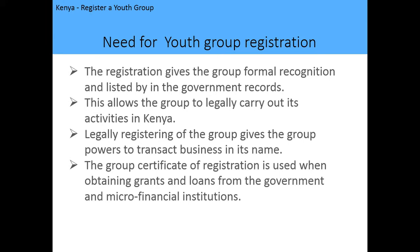The need for youth group registration: registration gives the group formal recognition and it is listed by the government in its records. This also allows the group to legally carry out its activities in Kenya. Legally registering the group gives it powers to transact business in the group's name. The certificate of registration is used when obtaining grants and loans from the government or a financial institution, and also when opening a bank account for the youth group.